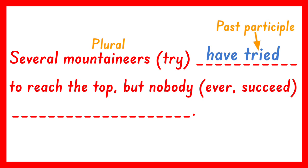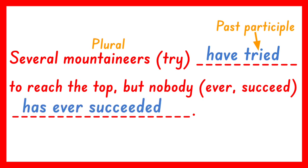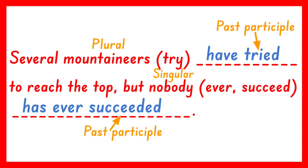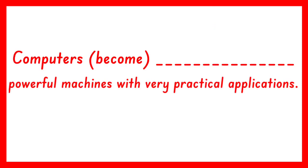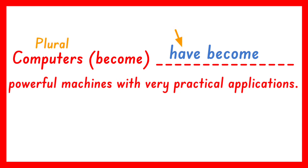How about the verb succeed? The answer is has ever succeeded. Because the indefinite pronoun nobody takes a singular verb, so has should be used, and the past participle of succeed is succeeded. By the way, ever here is not a verb; it is only used for emphasis that nobody has made it so far. Another one: Computers (become) powerful machines with very practical applications. The answer is have become. Have is used because the subject computers is plural, and the past participle of become is still become.